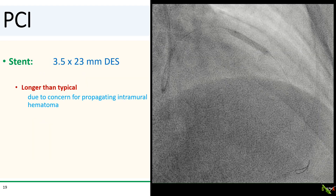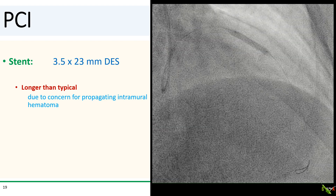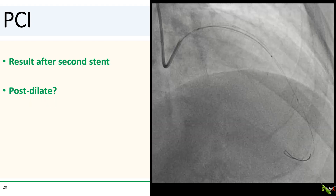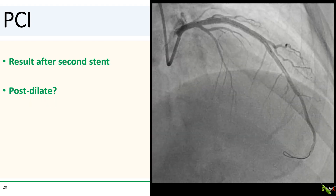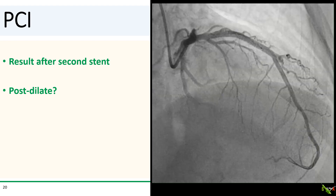We deployed an overlapping 3.5 by 23 mm DES. We intentionally chose a longer stent to make sure it lands in distal healthy tissue and to help pin down any intramural hematoma. We had a reasonable result after the second stent.